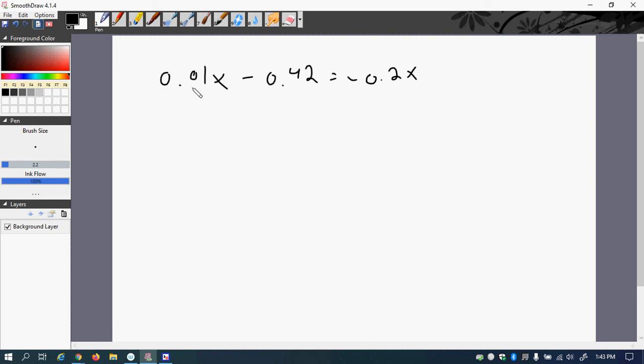So again, we don't really want to deal with the decimals, we'd like to get rid of them. And so it'd be easier to actually get a common denominator. If we change all these into regular fractions, that would make it 1/100x minus 42/100 and then minus 2/10x. So now these are all in fraction form, and then we can see that the common denominator would be 100.